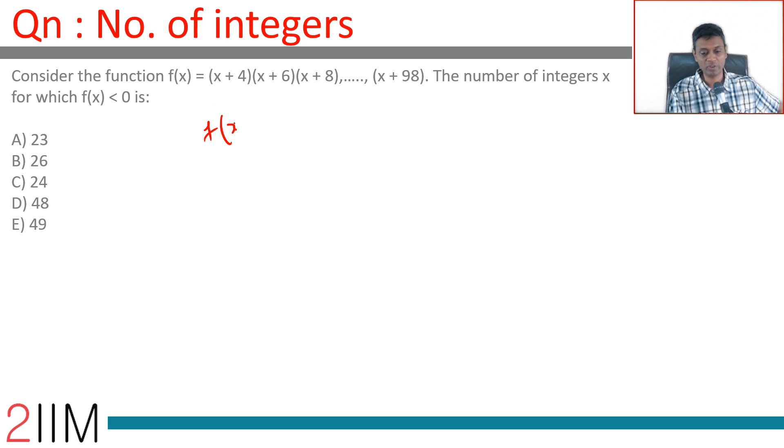Let us first find when f(x) equals 0. Put x equal to -4, -6, -8, -10, all the way till -98. We will get 0.